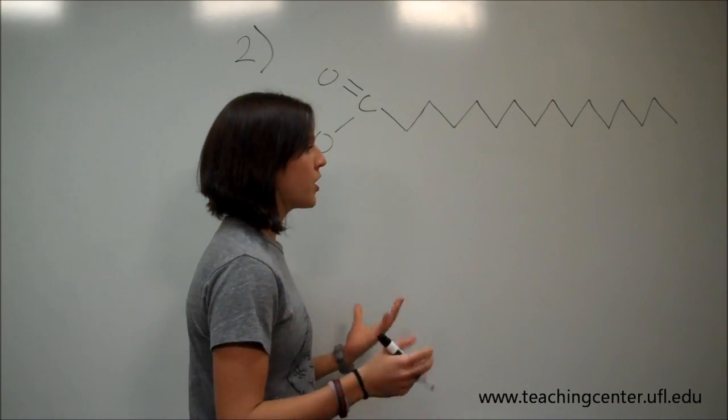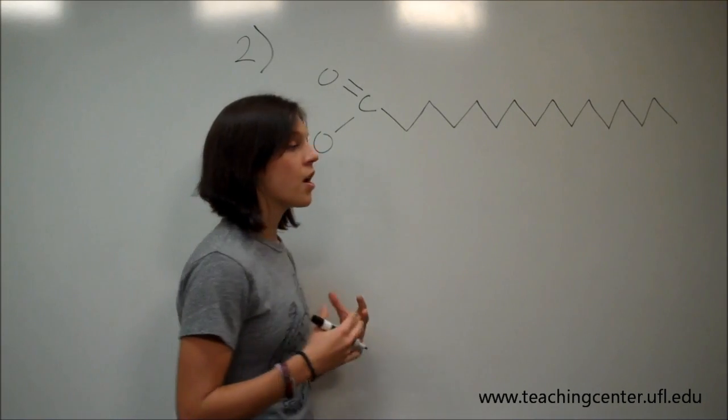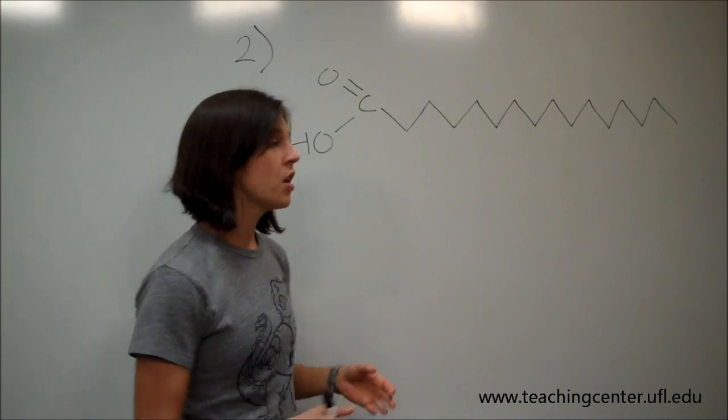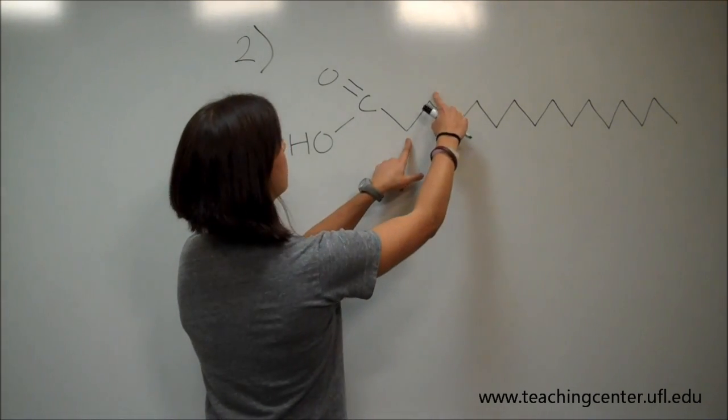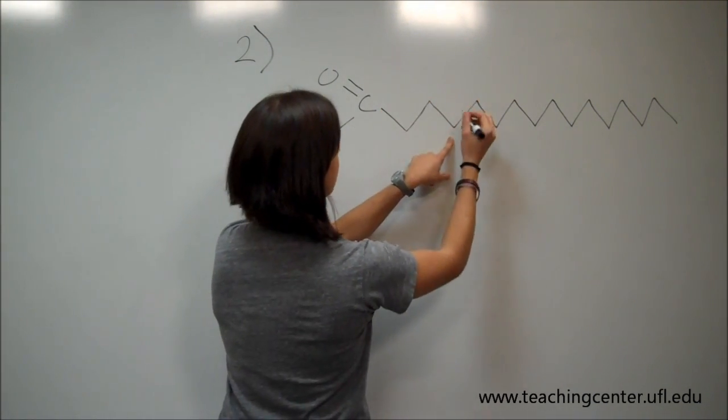And the question tells us that for a carbon-carbon bond, the distance is 1.5 angstroms. So while looking at this, the distance that they're talking about is between these carbons throughout the whole fatty acid.